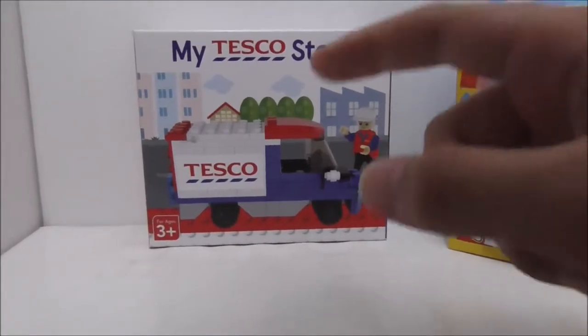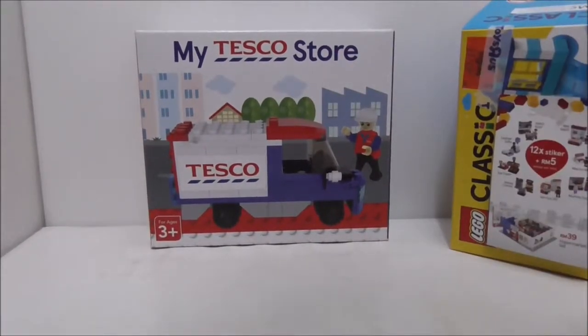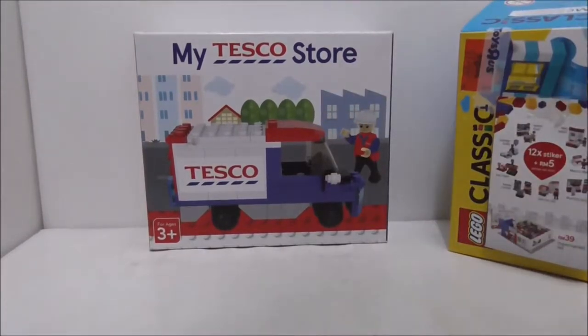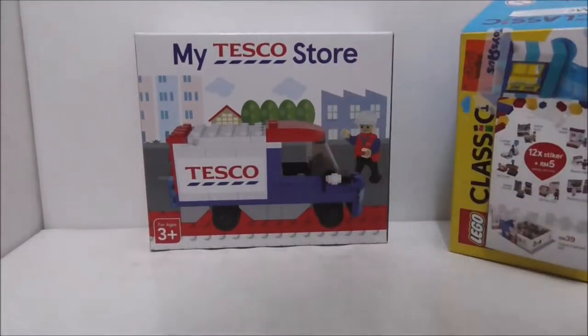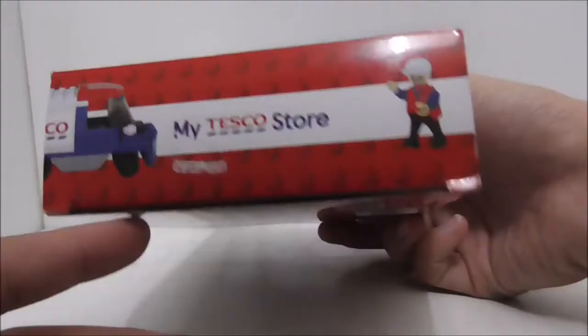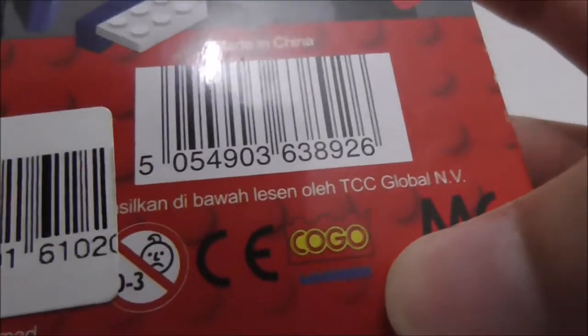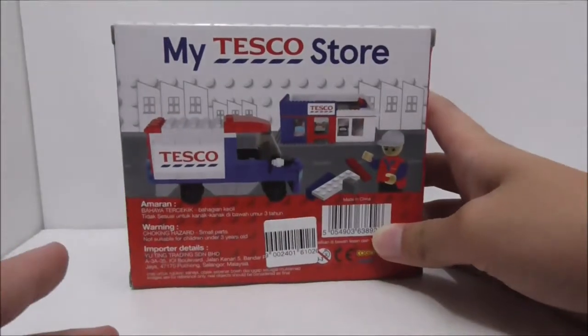If you pay with the stickers, you just have to pay 9 ringgit. But if you don't have the stickers, you have to pay 19 ringgit which is a little bit kind of a rip off. So here's the box. Just a pretty simple all my Tesco store all around it and you got the Kogo Maggi bricks. So here's the back.